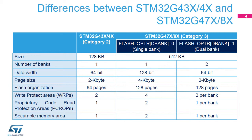This enables programming or erasing one bank while executing code from the other bank. The page size, which provides the minimum array granularity, is 2 kilobytes for category 2, 4 kilobytes for category 3 with single bank, and 2 kilobytes for category 3 with dual bank. The number of pages is 64 for category 2 and 128 for category 3. Category 2 microcontrollers have one write protect area, one PC-ROP and one securable memory area, while category 3 microcontrollers have two of each.